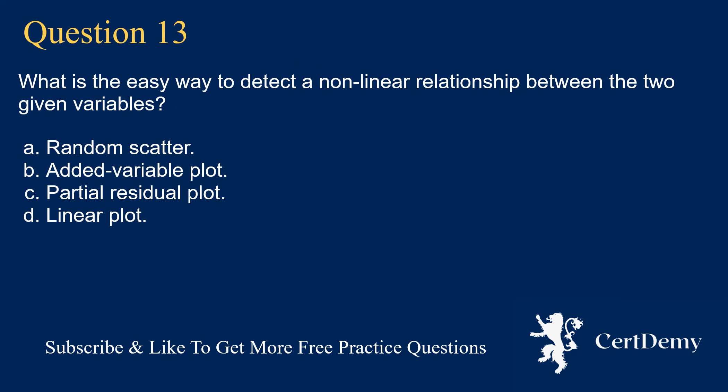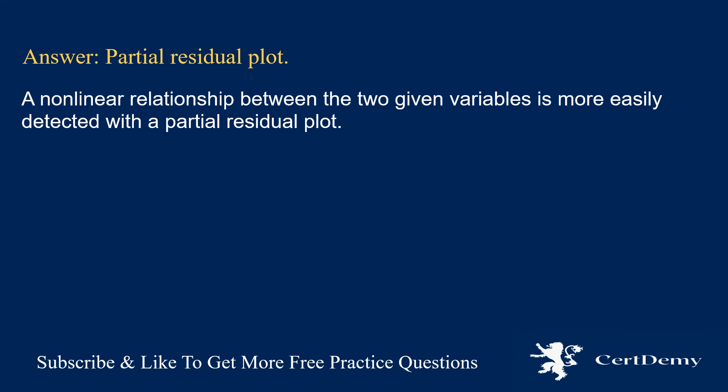Question 13. What is the easy way to detect a nonlinear relationship between two given variables? The answer is: partial residual plot. A nonlinear relationship between two given variables is more easily detected with a partial residual plot.